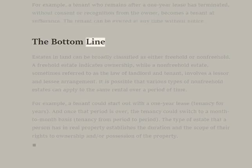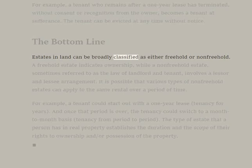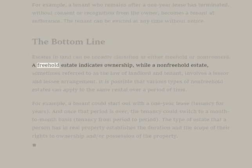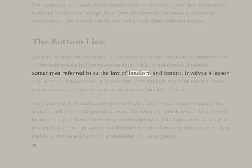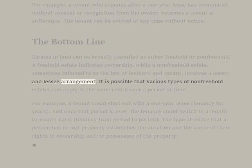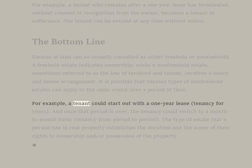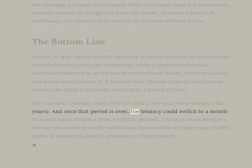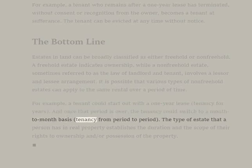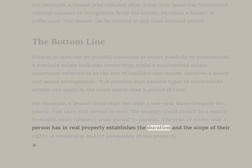The Bottom Line. Estates in land can be broadly classified as either freehold or non-freehold. A freehold estate indicates ownership, while a non-freehold estate — sometimes referred to as the law of landlord and tenant — involves a lessor and lessee arrangement. It is possible that various types of non-freehold estates can apply to the same rental over a period of time. For example, a tenant could start out with a one-year lease (tenancy for years), and once that period is over, the tenancy could switch to a month-to-month basis (tenancy from period to period). The type of estate that a person has in real property establishes the duration and the scope of their rights to ownership and/or possession of the property.